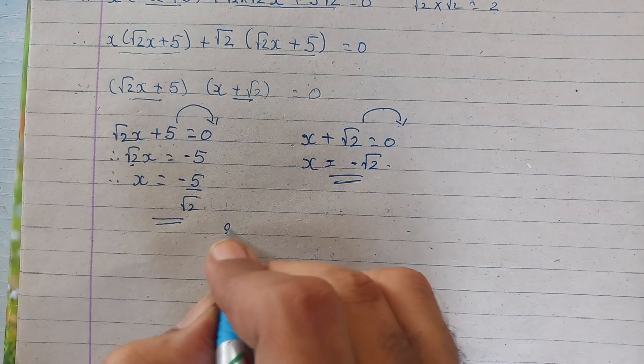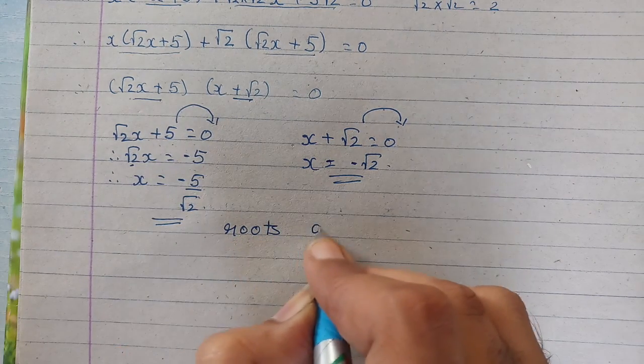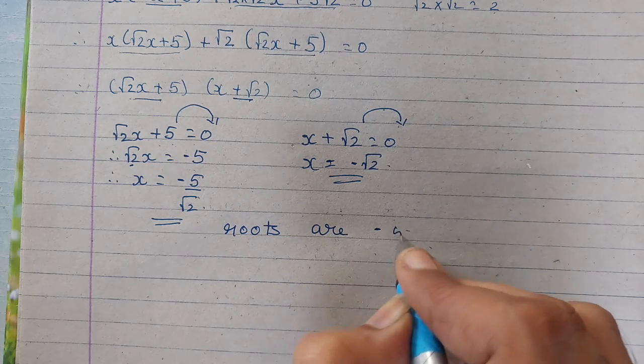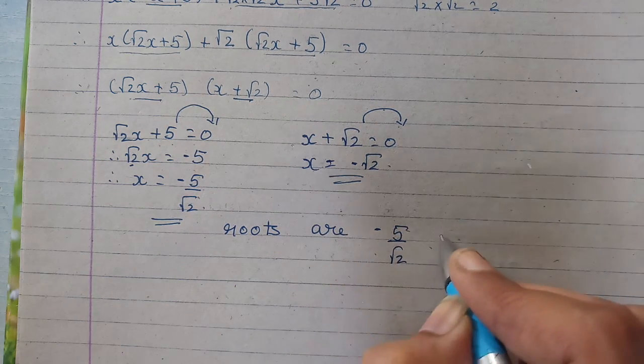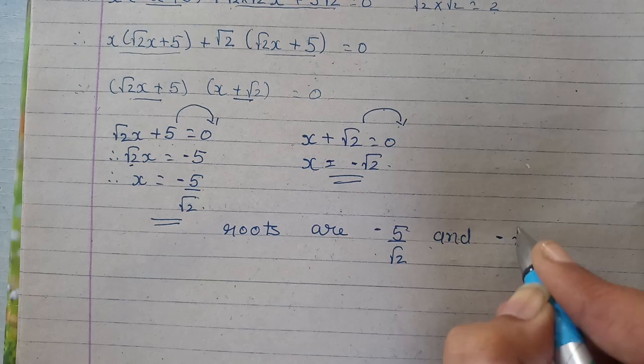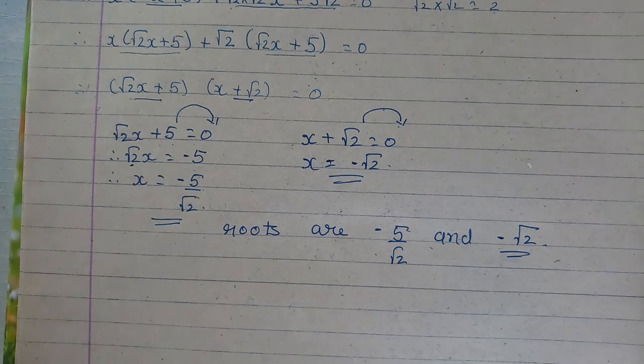Clear? So we can write that roots are minus 5 by root 2 and second root is minus root 2. Clear?